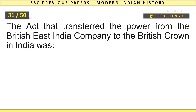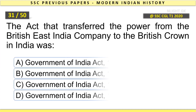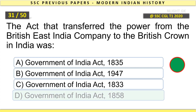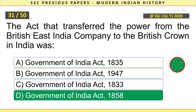The Act that transferred power from the British East India Company to the British Crown in India was the Government of India Act, 1858.